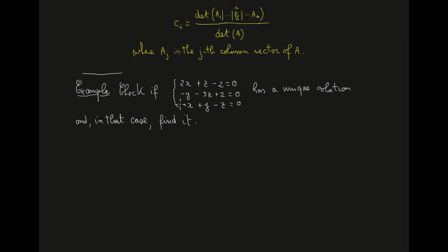Let's see an example and application of this theorem. Consider the following system of linear equations: the first equation is 2x plus z minus 2 equals 0; the second is minus y minus 3z plus 2 equals 0; and the third is minus x plus y minus z equals 0. Let's verify whether it has a unique solution, and if so, apply the algorithm to compute the solution.